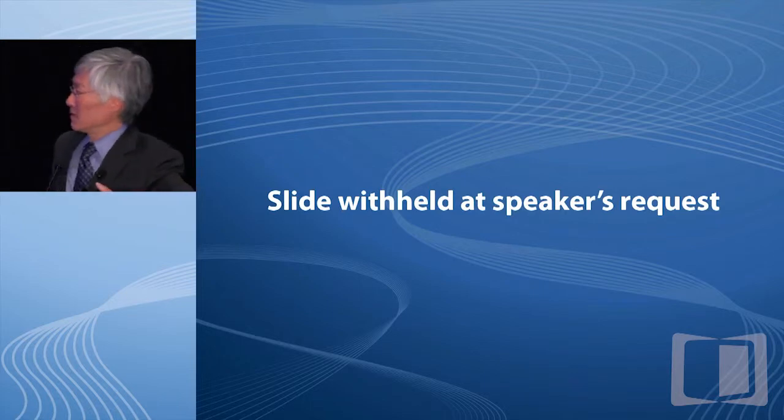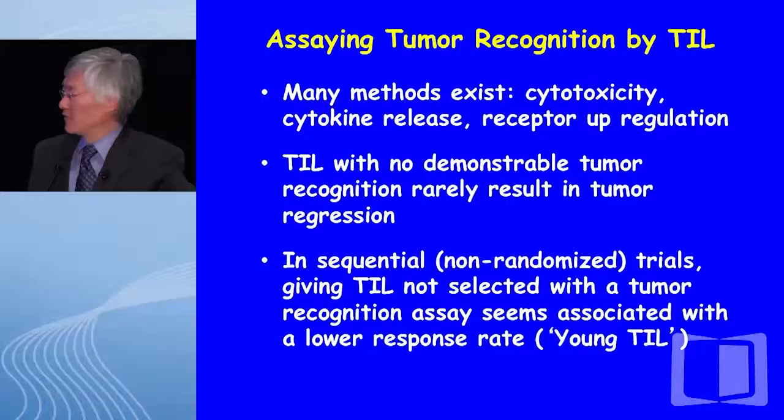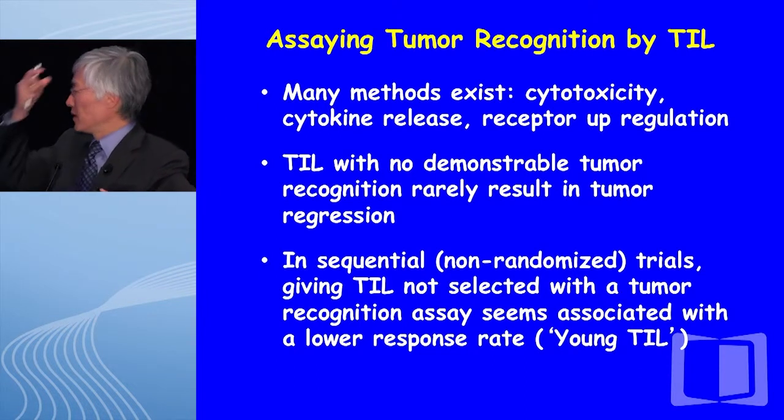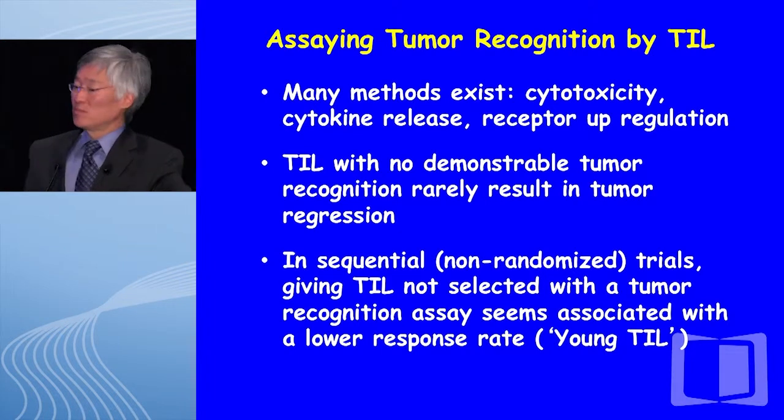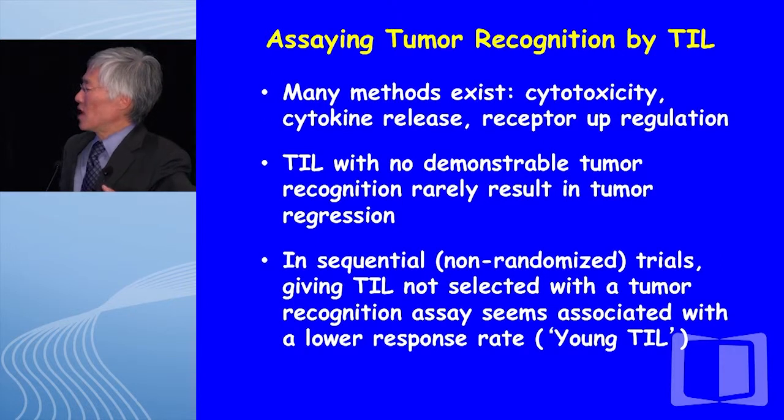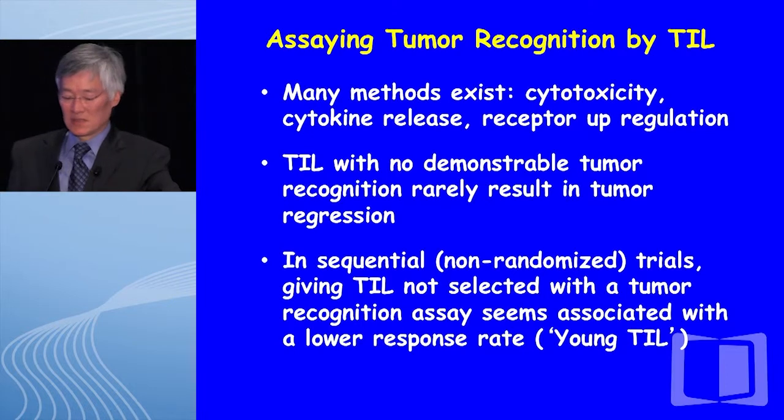Looking at selected versus unselected for autologous tumor recognition, we did a subsequent trial where patients in the non-TBI arm of a randomized trial all get their TIL whether or not they're reactive, but we use the assay to select individual fragment cultures that appear to have reactivity. With this intervention, the preliminary response rate in the first 44 patients in that arm is again 48%. In non-randomized back-and-forth analyses, the assay and selection appears to have benefit. There are many ways to assay — cytotoxicity, cytokine release, 4-1BB upregulation. TIL with no demonstrable tumor recognition rarely cause any regression.